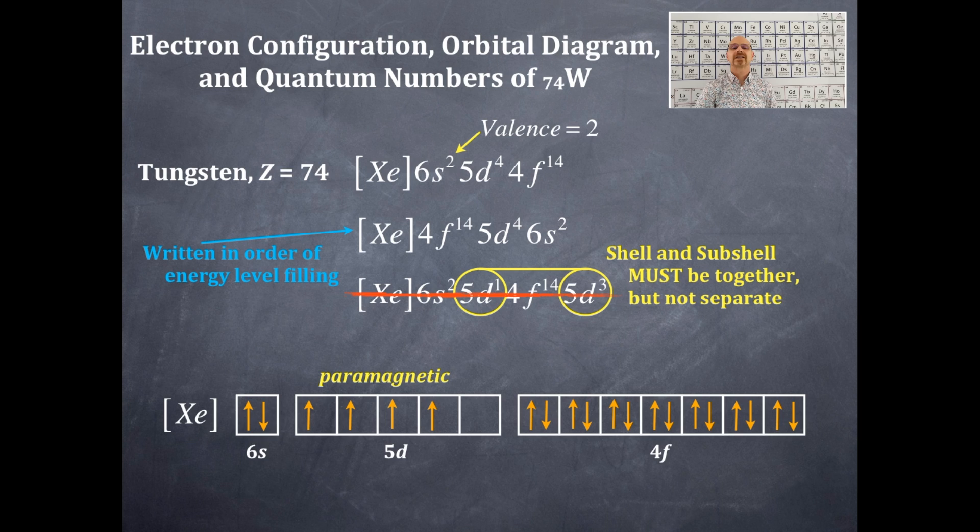Now we're going to get a set of quantum numbers to represent a particular electron. I'm going to circle an electron right here and we're going to get a set of four quantum numbers to represent that circled blue electron. Remember n, l, m sub l, m sub s.